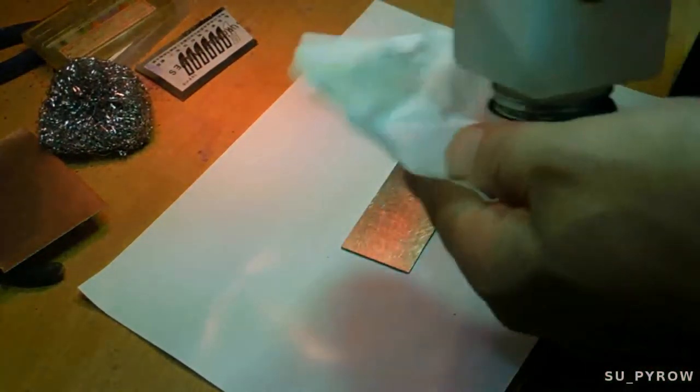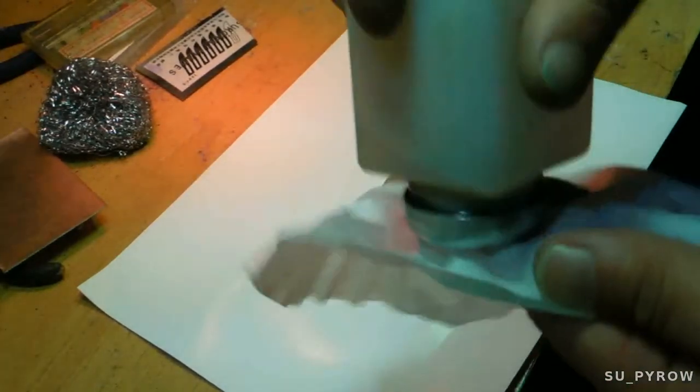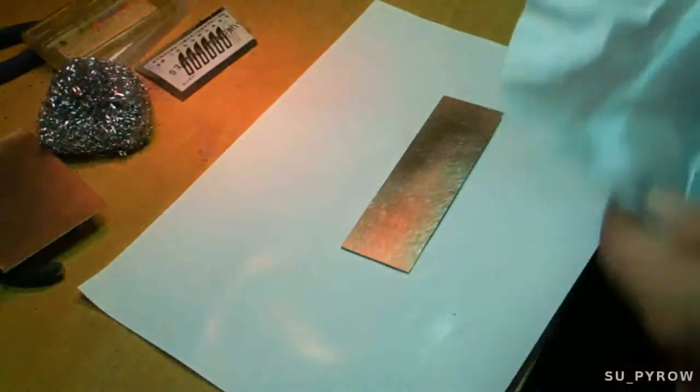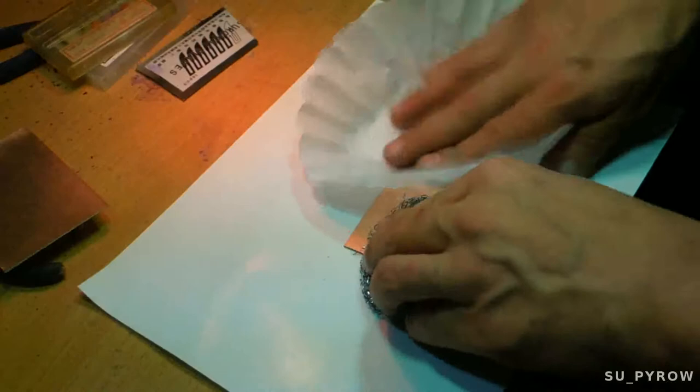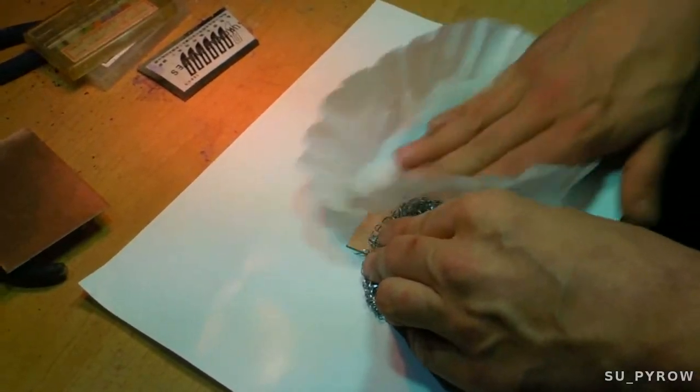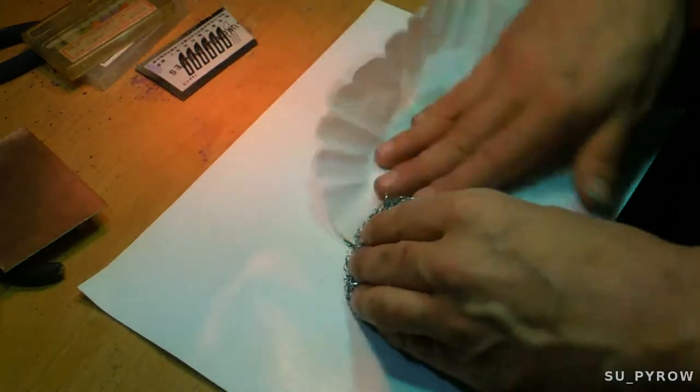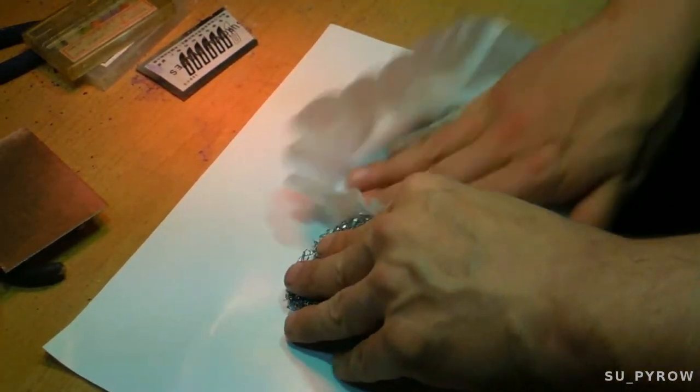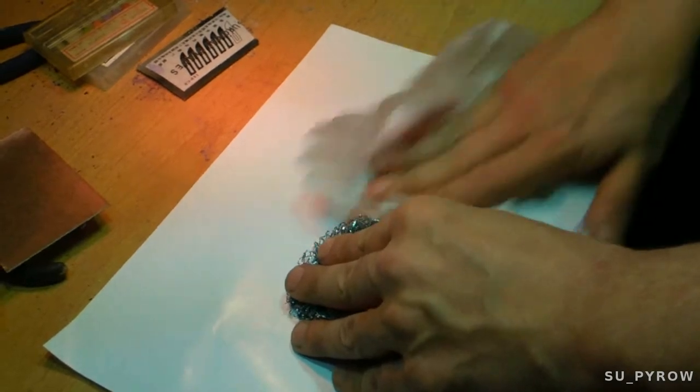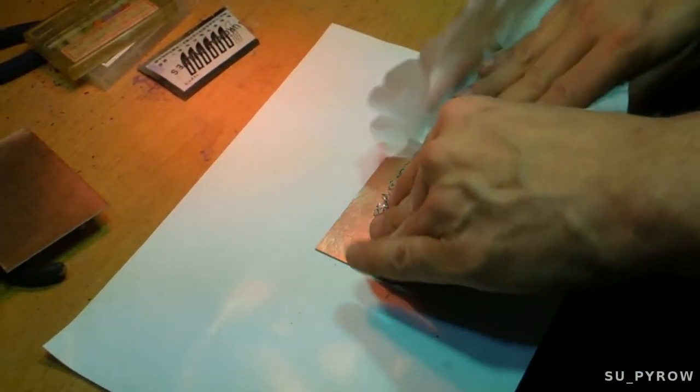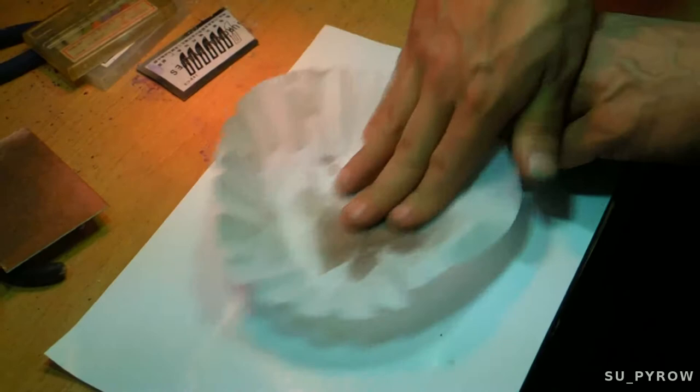I use rubbing alcohol, this is 91%. And we're just going to clean the board. You can see how dirty that comes out. Now all that's got to come off. All of that's got to come off. That'll trip you up.